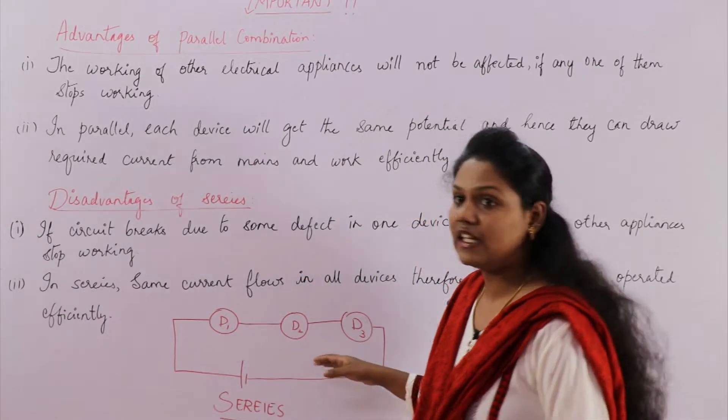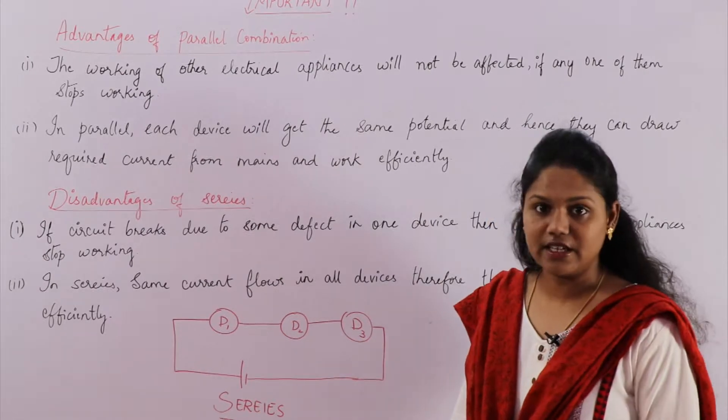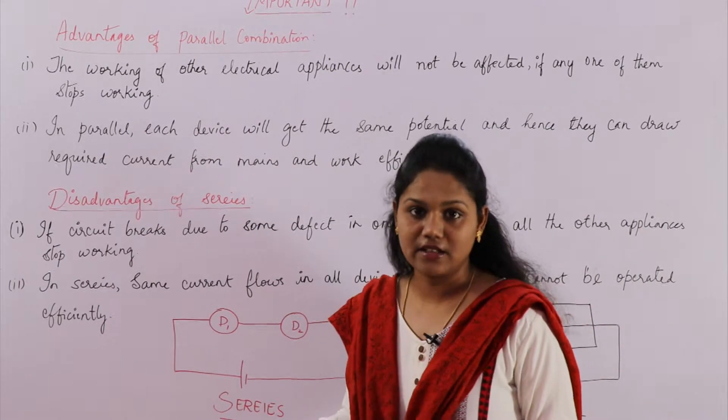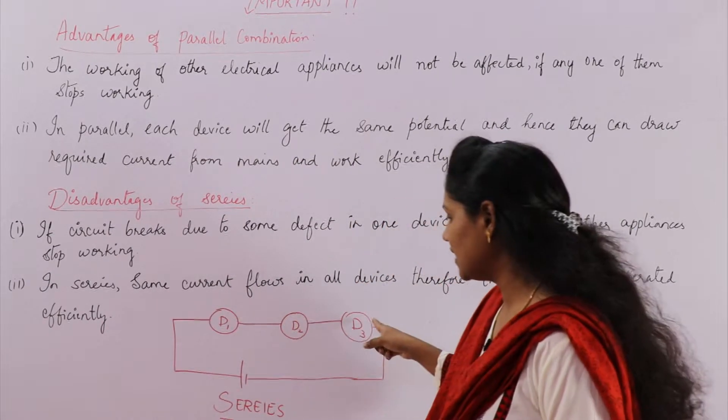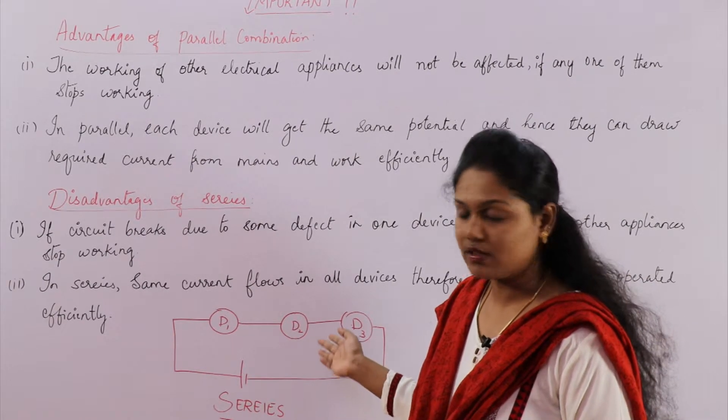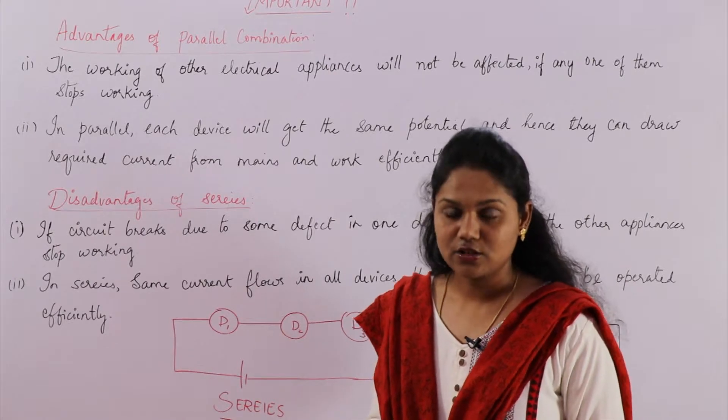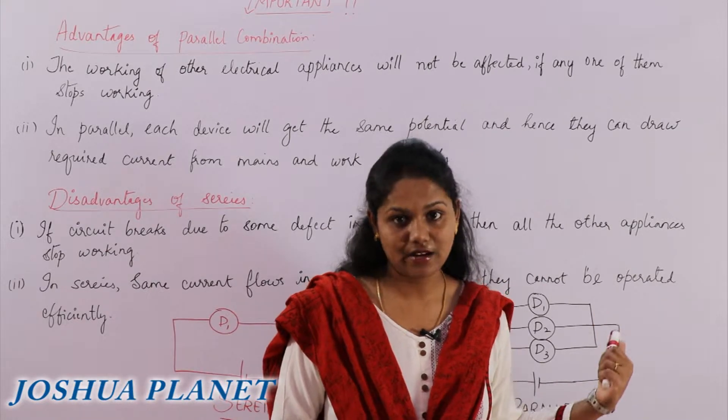Whereas in case of series, if you say suppose device two is affected, it is broken down, there the circuit what happens is it will not be complete, the circuit is broken down. Therefore, the current that is passing like this will not pass to the next device. So because the circuit becomes incomplete, all the devices will stop working. So this is one of the disadvantages of series and advantages of parallel.